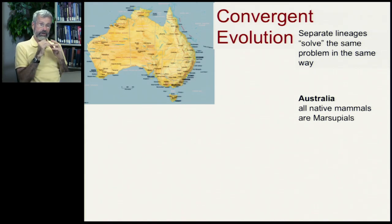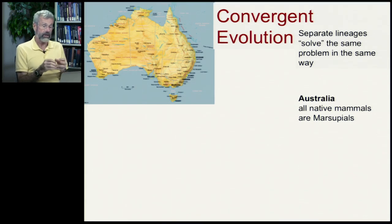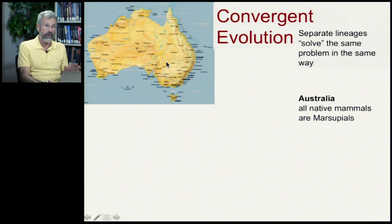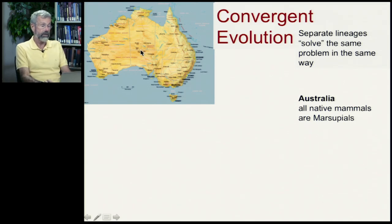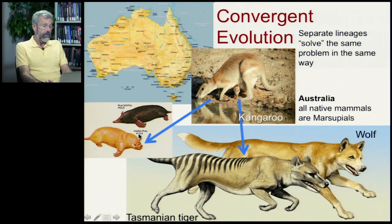Australia is an extraordinary continent — it separated off quite some time ago, leaving an early form of mammals called marsupials that were really common in those days. These were the only mammals in Australia throughout its history until just recently, when modern humans brought their pets to the continent. From this extraordinary marsupial lineage diversified things like kangaroos, marsupial moles, and Tasmanian tigers.